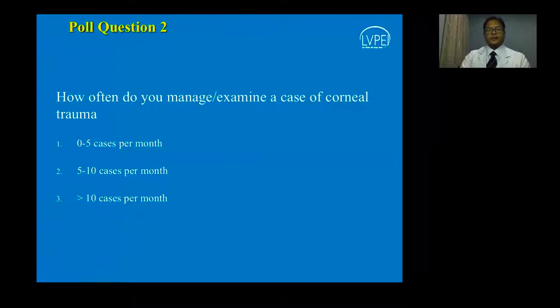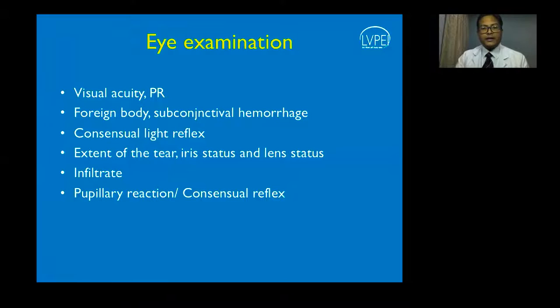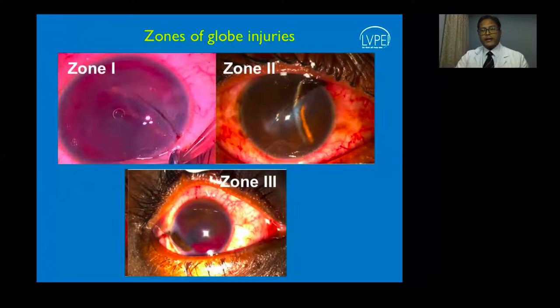All of us in this discussion room have fair exposure to a large number of trauma cases, and our discussion will also be mostly scenario-based. When performing an eye examination, look for visual acuity, accuracy of projection, presence of foreign bodies, subconjunctival hemorrhages. The consensual light reflex is very important when you cannot visualize the anterior segment structures. Note the extent of the tear, associated infiltrates, and pupillary reactions. Broadly, trauma can occur in three zones: zone 1 restricted to the cornea, zone 2 with concomitant limbal involvement, and zone 3 with posterior extension.